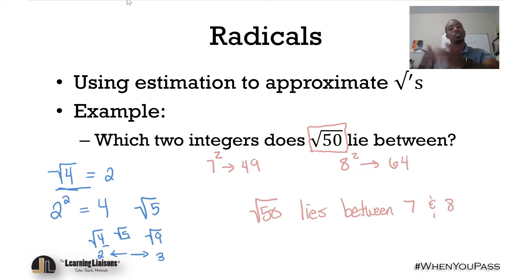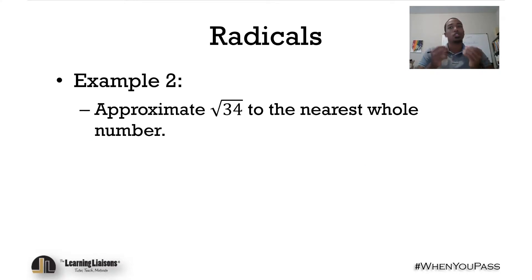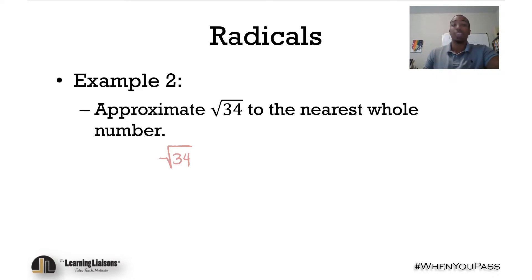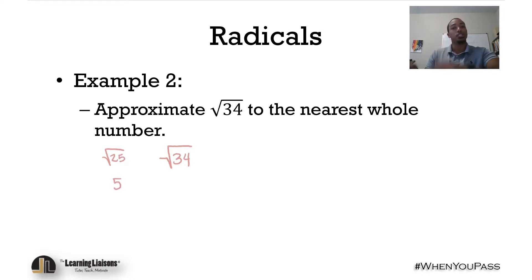Later in this video we'll use that knowledge to compare numbers. Moving on to example two: approximate the square root of 34 to the nearest whole number. Using the same technique, what two perfect squares does 34 lie between? On the lower end, the square root of 25 is 5. The next perfect square is 36, which gives us 6. So the square root of 34 lies between 5 and 6.